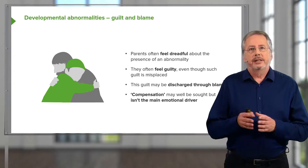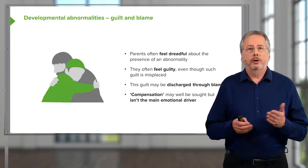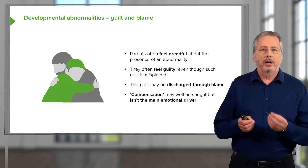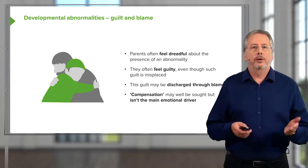One problem is that parents often feel extremely bad when their child has been born with an abnormality. Even though it's inappropriate, they may feel personally guilty and personally at fault. If there is a genetic cause, there is absolutely no fault or blame that should attach to the parents. Nonetheless, people will often feel that, and sometimes they attempt to discharge it by finding something else to blame. Parents of children with developmental abnormalities are looking for something outside themselves to blame, even though in reality they were never to blame at all. Sometimes that takes the form of seeking compensation, but the main driver is this emotional need to discharge inappropriate guilt by finding somebody else whose fault it might appear to be.